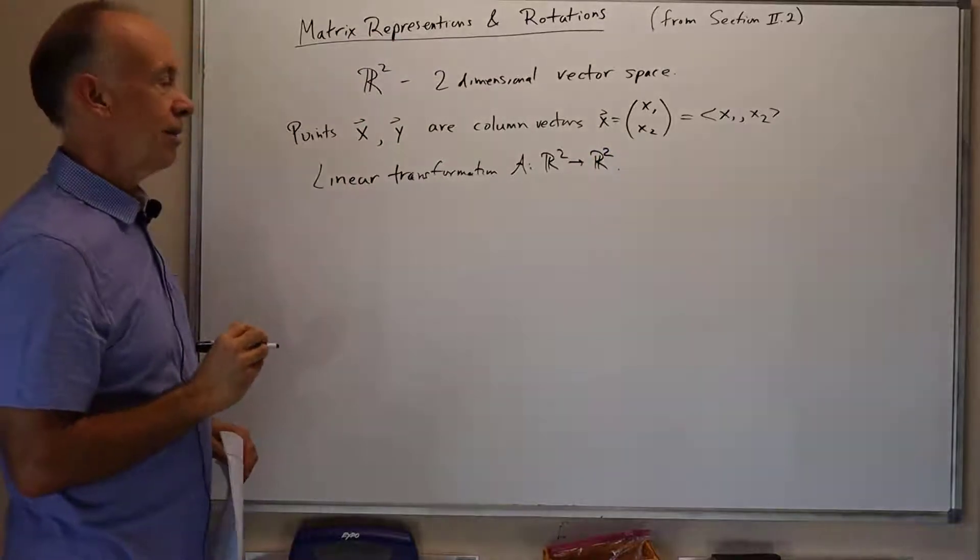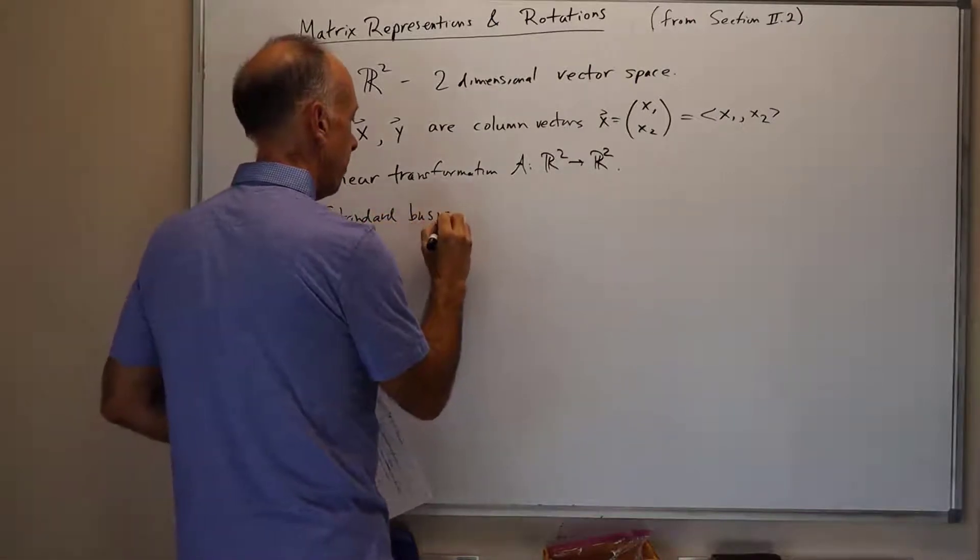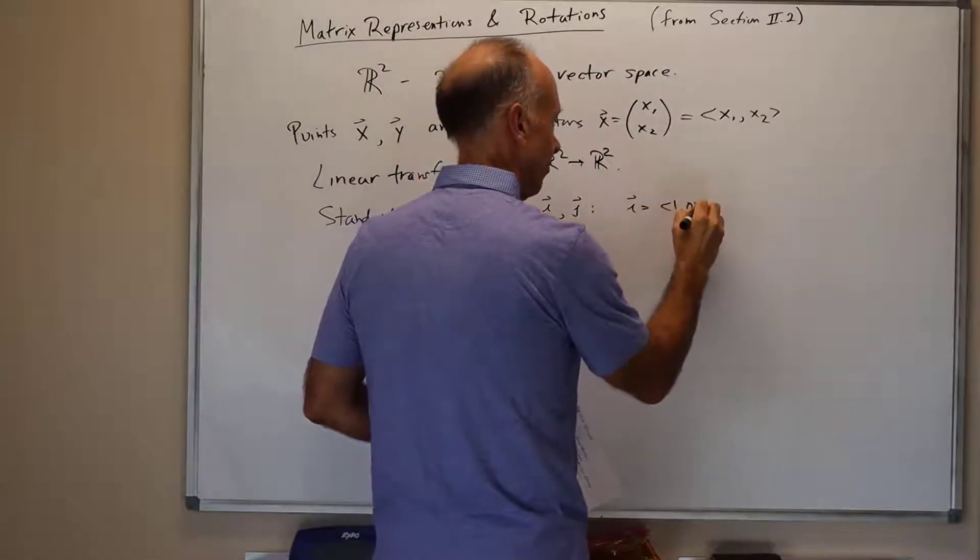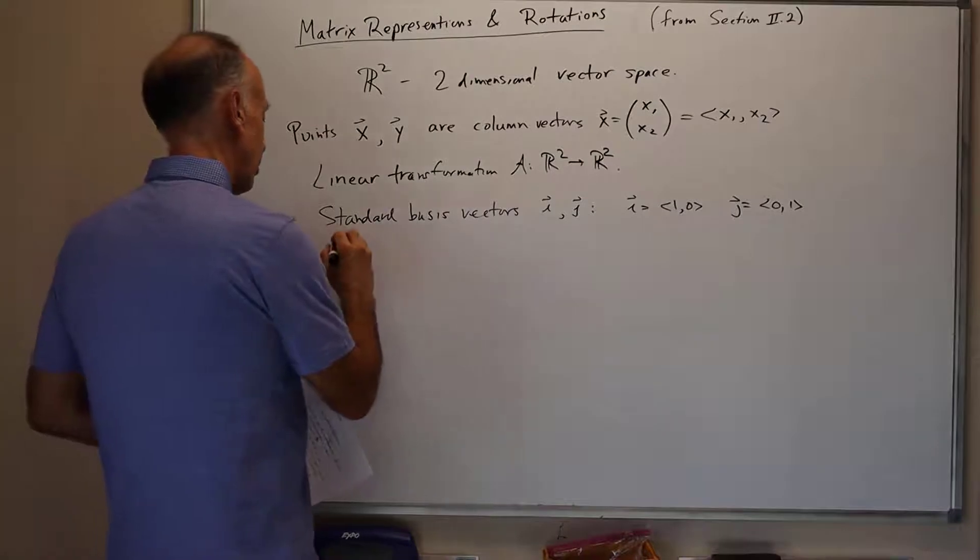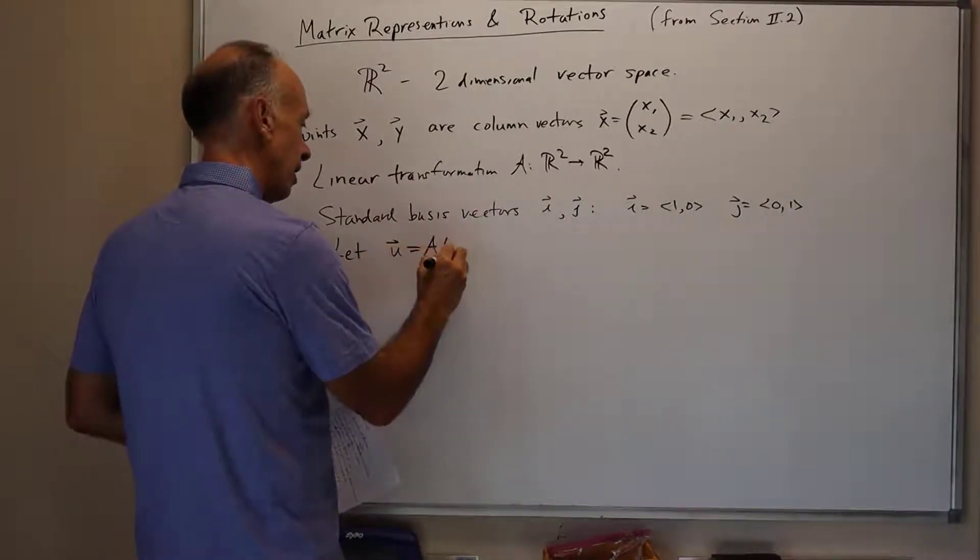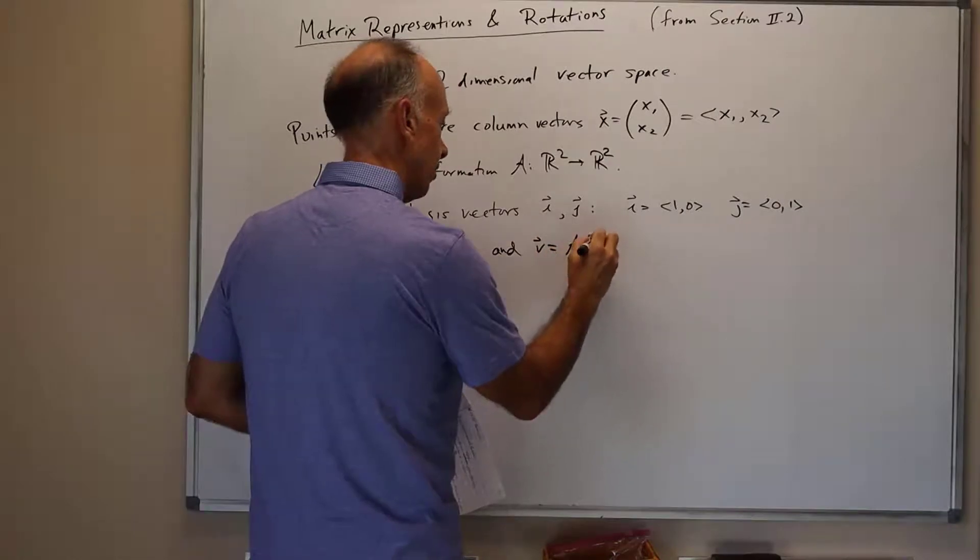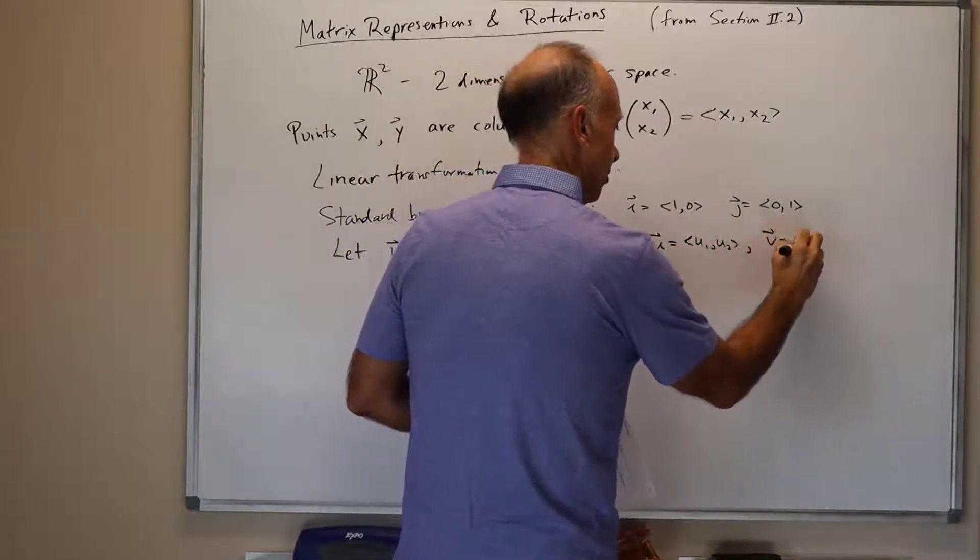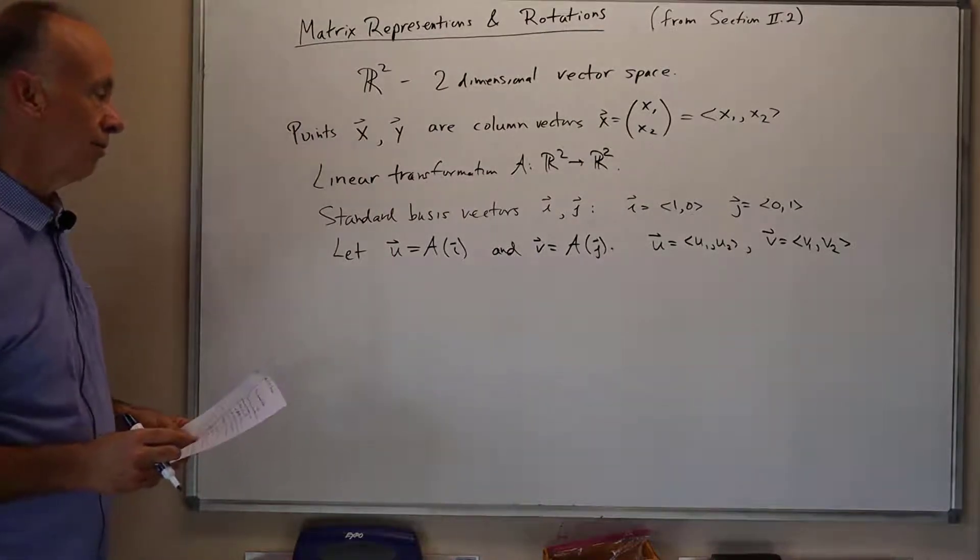Let's look at two special vectors in R2. The standard basis vectors are called i and j. This i is the vector 1, 0, the column vector 1, 0. And j is the column vector 0, 1. Let u be the vector that's the value of A of i. Let v be A of j. We'll write u in the form with its components: u has two components, u1 and u2, its x and y components. And v has its two components, v1 and v2.